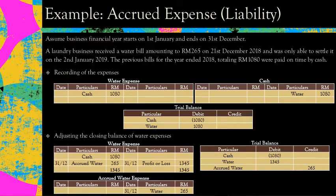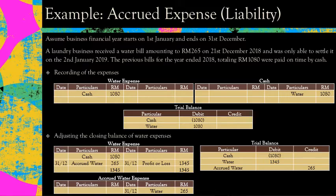Assume that the business financial year starts on 1st January and ends on 31st December. A laundry business received a water bill amounting to RM265 on 21st December 2018, but was only able to settle it on 2nd January 2019, which is in the other accounting period. So when you close your account on 31st December 2018, the money has not yet been paid — you are owing to the service provider.